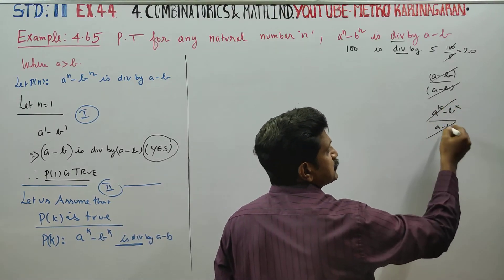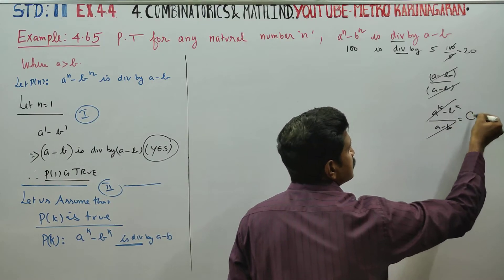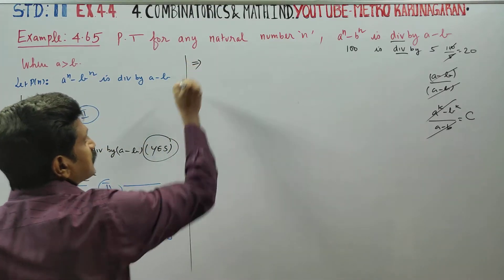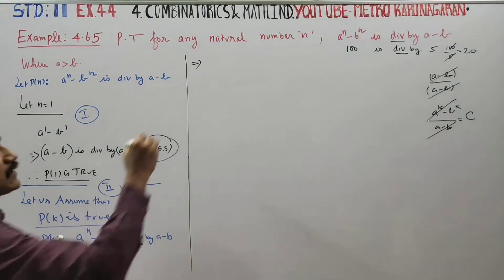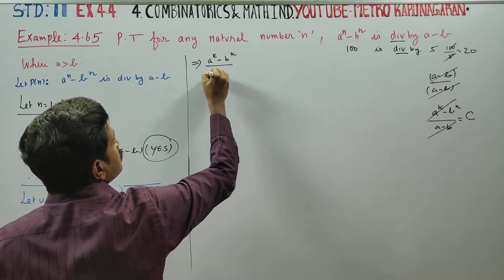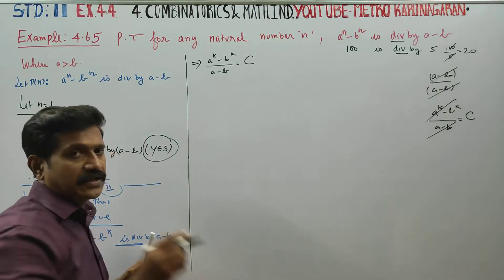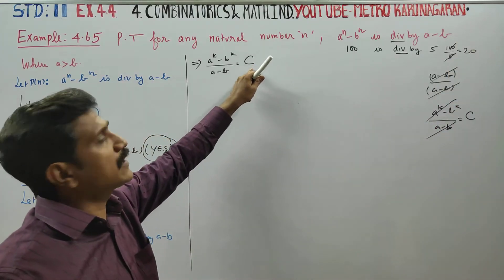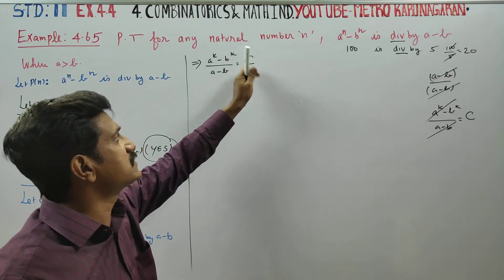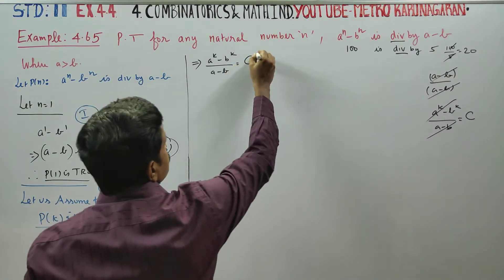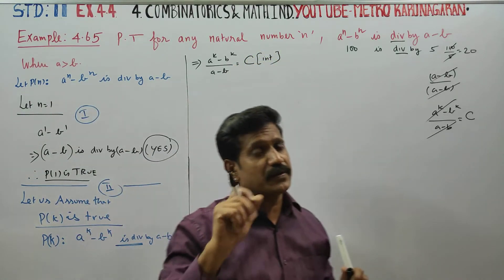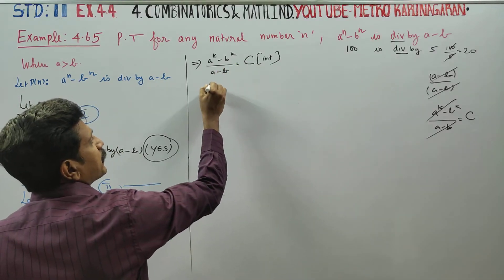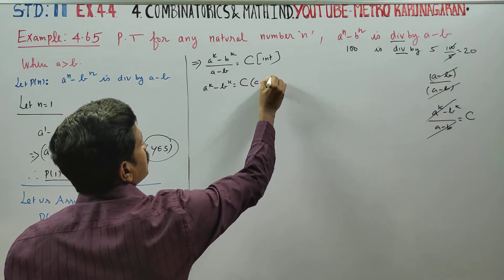A power k minus b power k divided by a minus b gives us some integer c. So a power k minus b power k equals c times a minus b, where c is an integer.